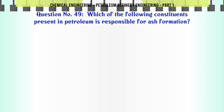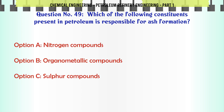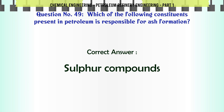Which of the following constituents present in petroleum is responsible for ash formation? A. Nitrogen compounds, B. Organometallic compounds, C. Sulfur compounds, D. Oxygen compounds. The correct answer is Sulfur compounds.